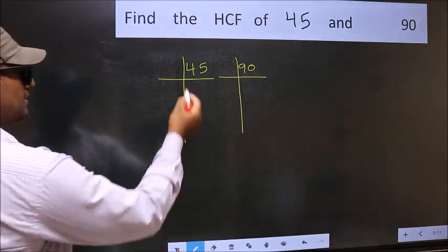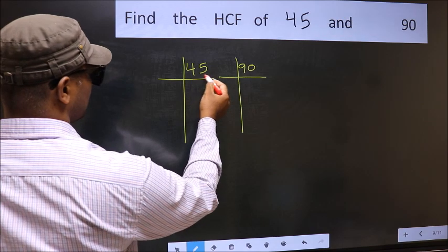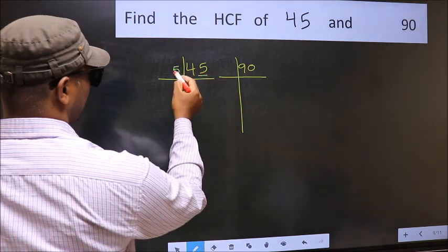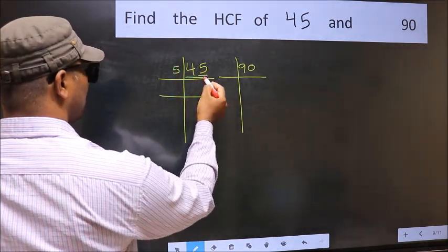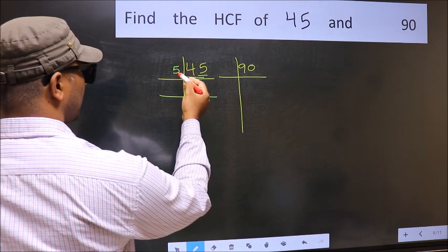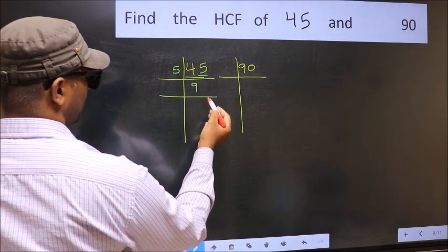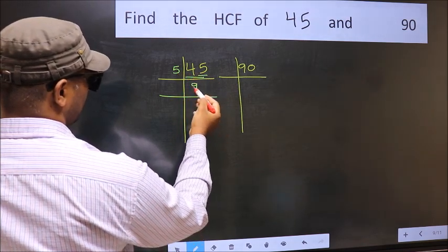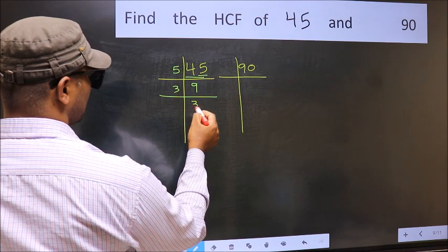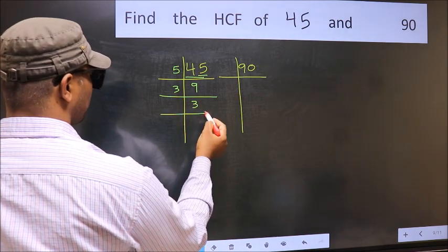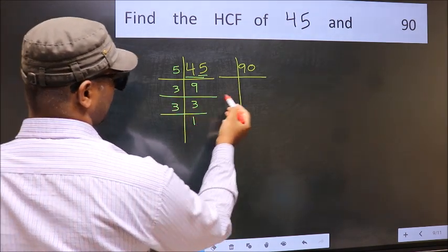For 45, the last digit is 5, so we divide by 5. 5 nines is 45, so we get 9. Now 9 is 3 times 3, and 3 is a prime number, so we stop at 3 times 3.